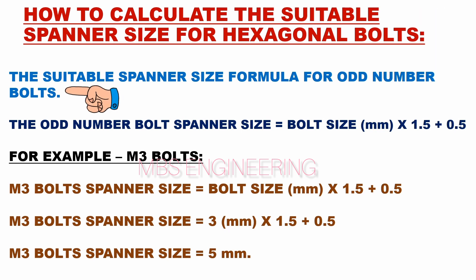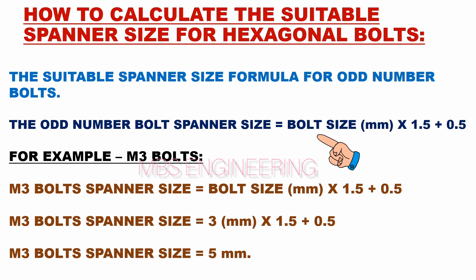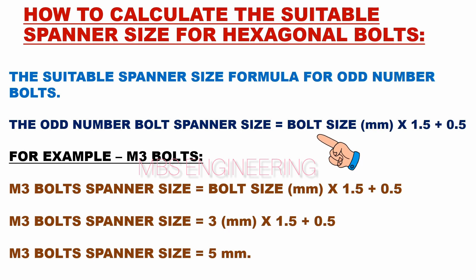The suitable spanner size formula for odd number bolts is as follows: the odd number bolt spanner size equals bolt size in mm multiplied by 1.5, plus 0.5.